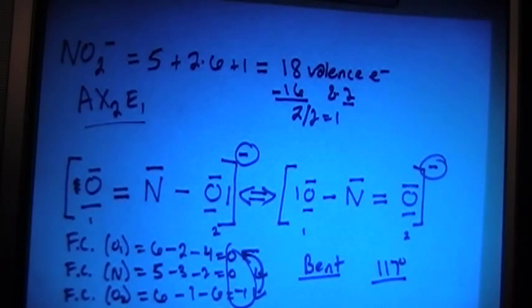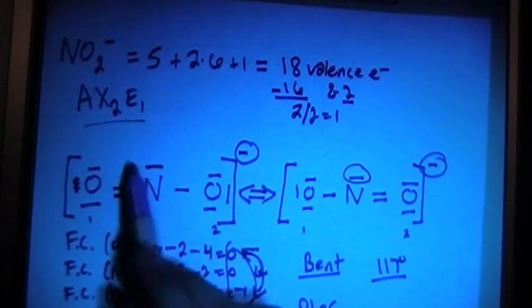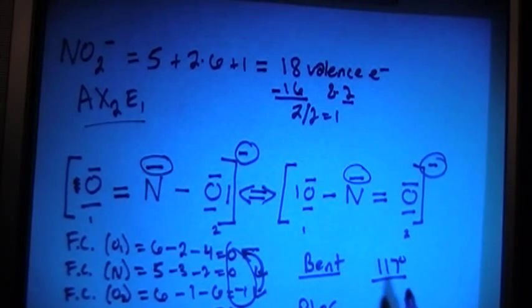And this is going to be a polar compound, because you have this lone electron pair up here that's going to offset the charge distribution within the molecule, and it's going to make it a polar compound.